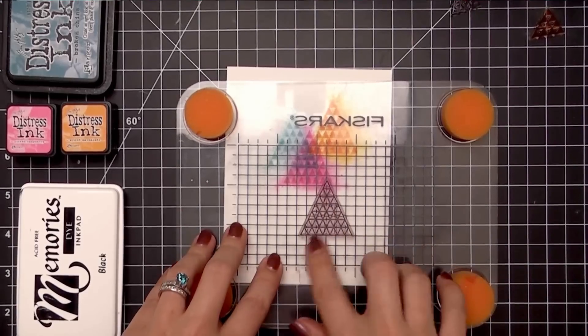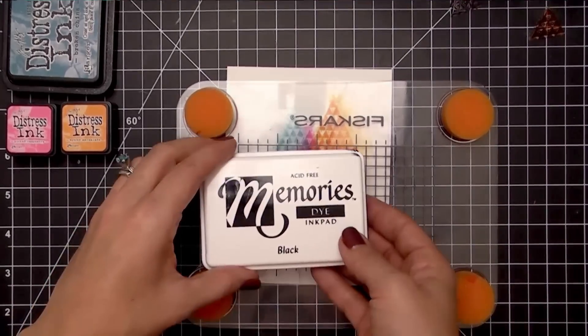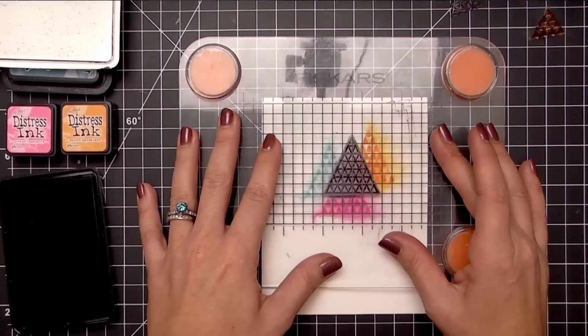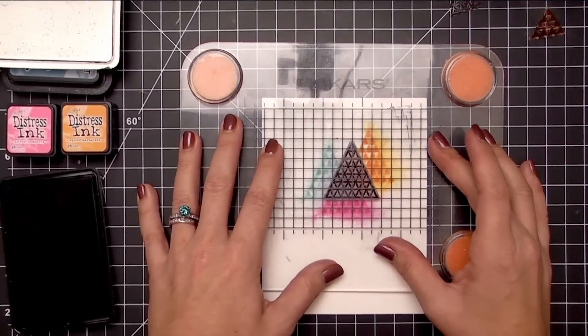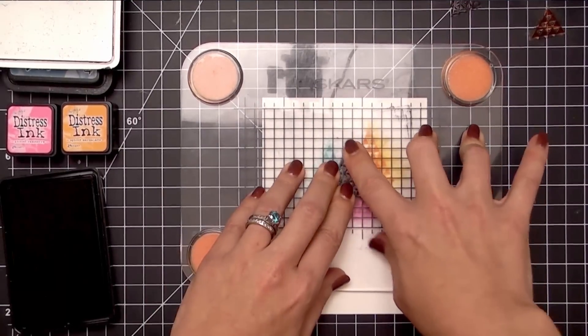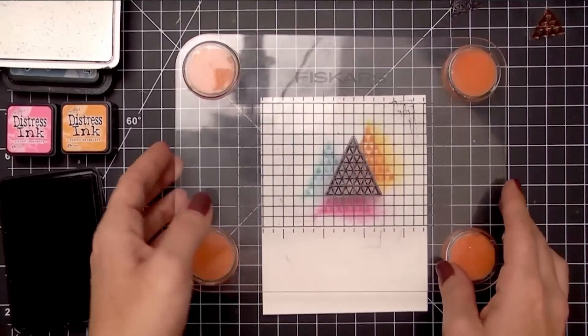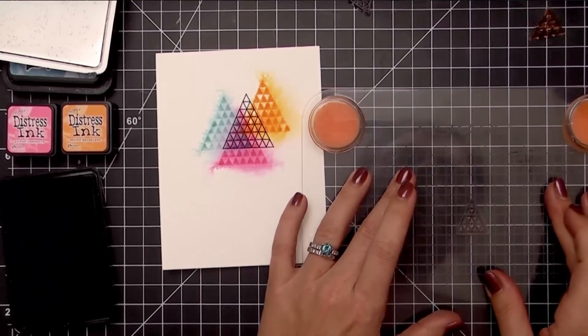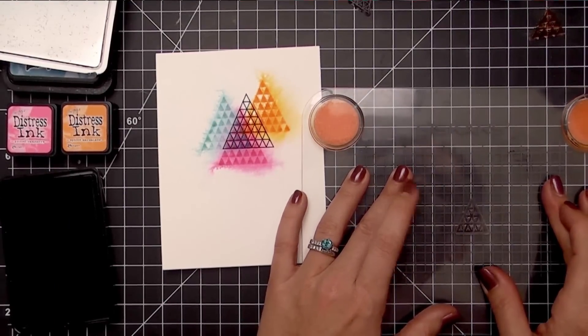Once that's dry, we're going to add these lined triangles that are also included in the set in Memento dye ink in black. I really love the way that this is going to make those colors seem a little less bright and vibrant. I'm lining this up over that large triangle and then slightly offsetting it.